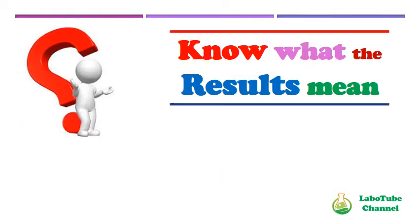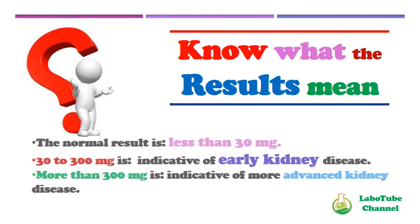Know what the results mean. The normal result is less than 30 mg. 30 to 300 mg is indicative of early kidney disease. More than 300 mg is indicative of more advanced kidney disease.